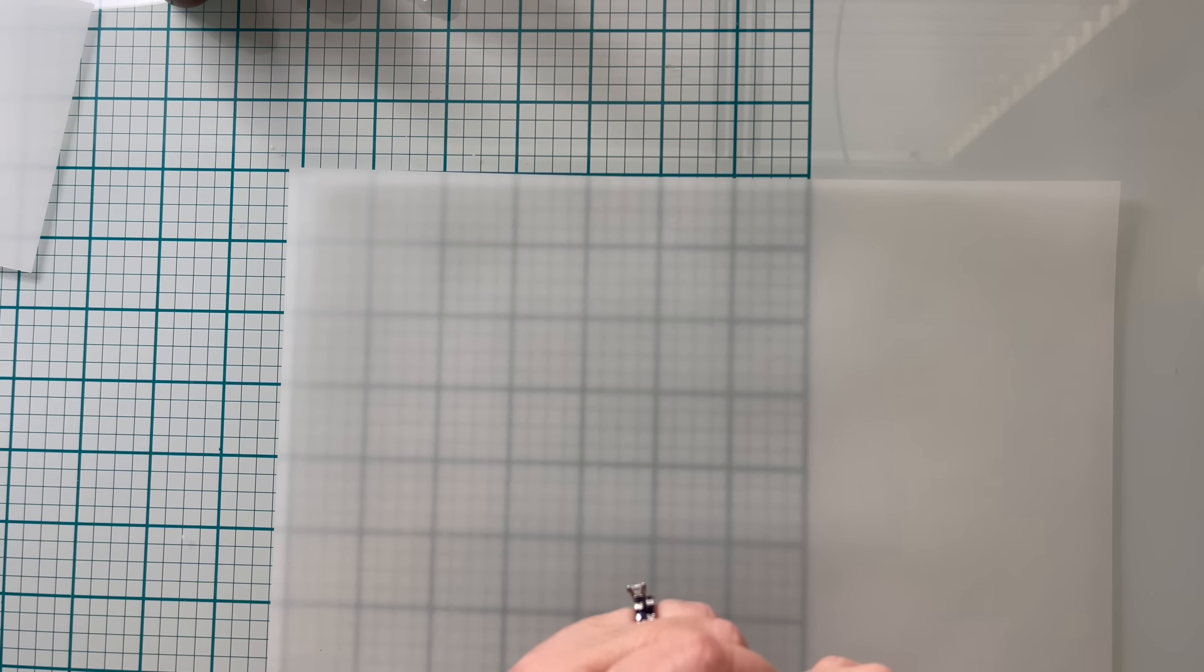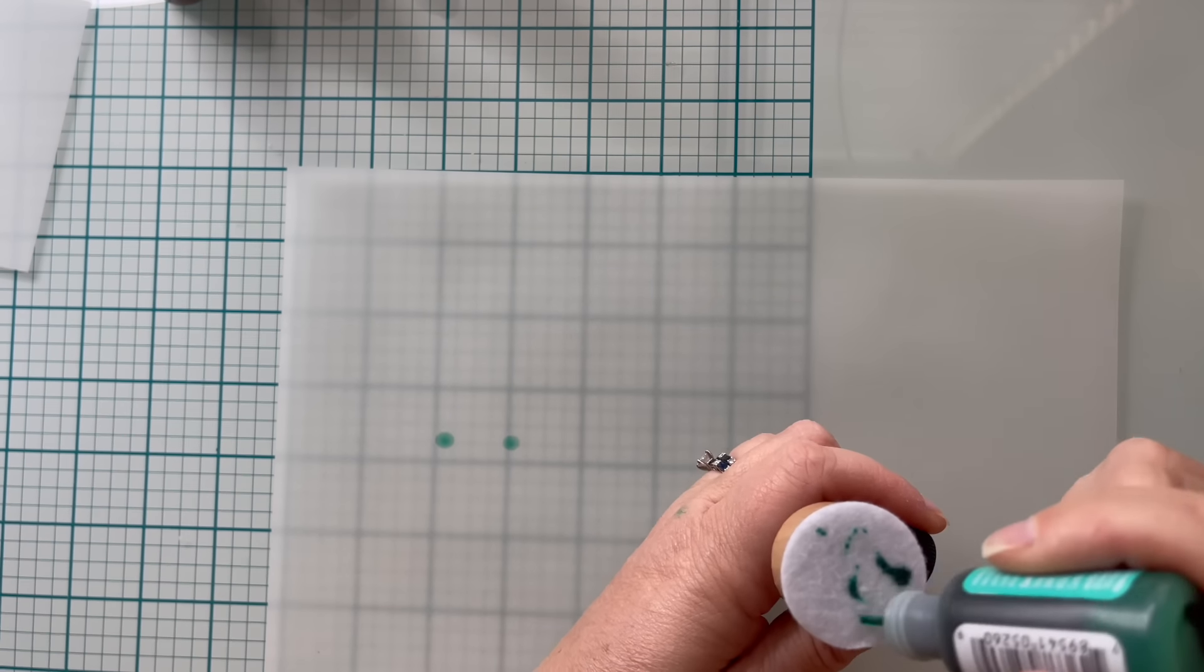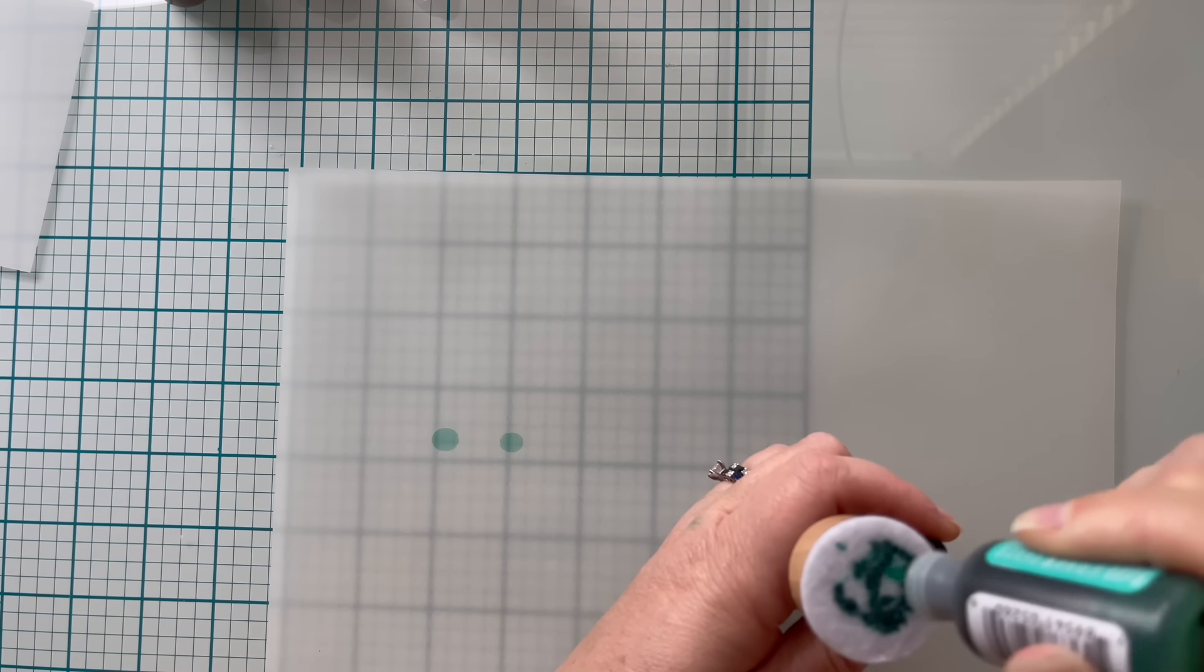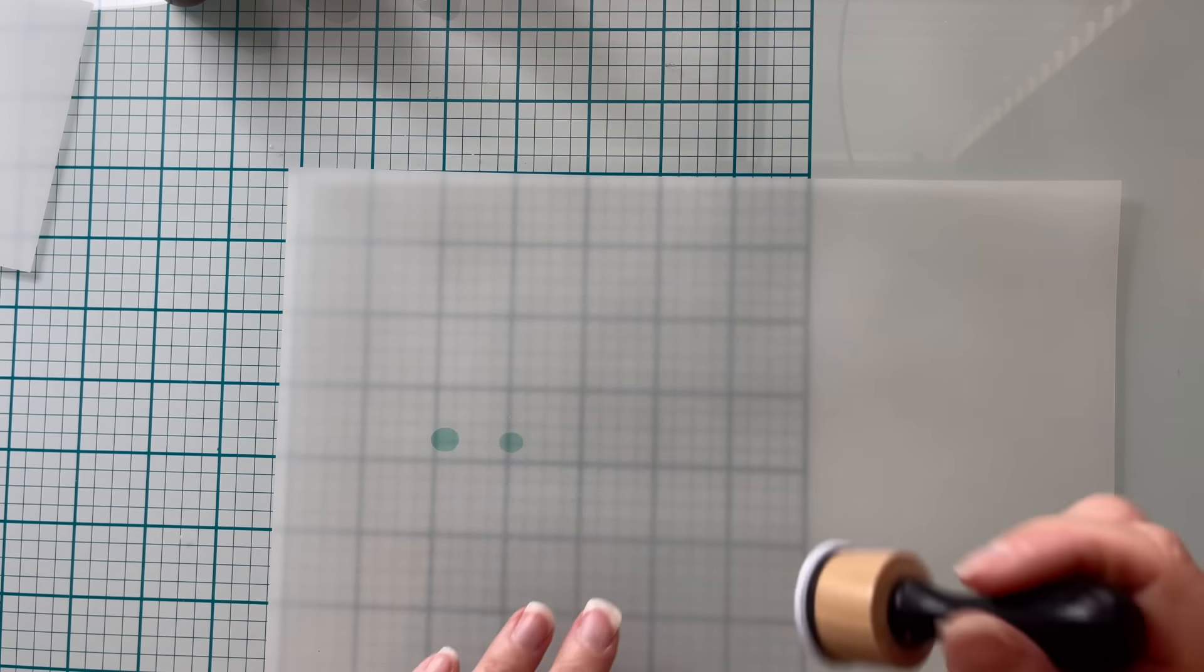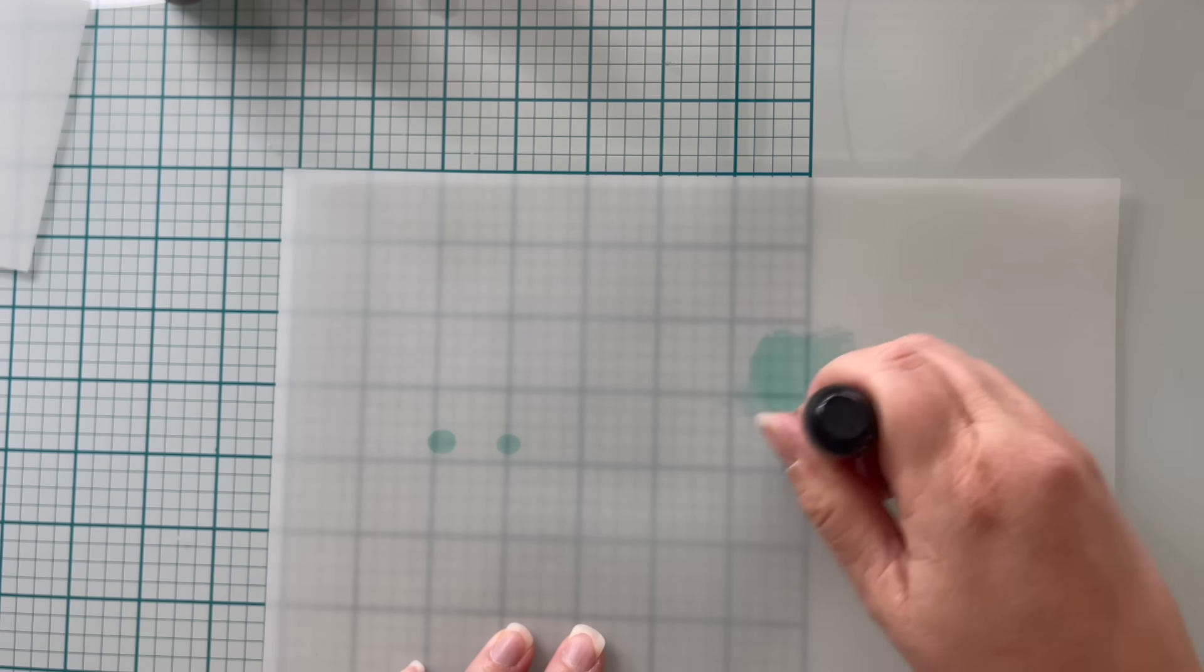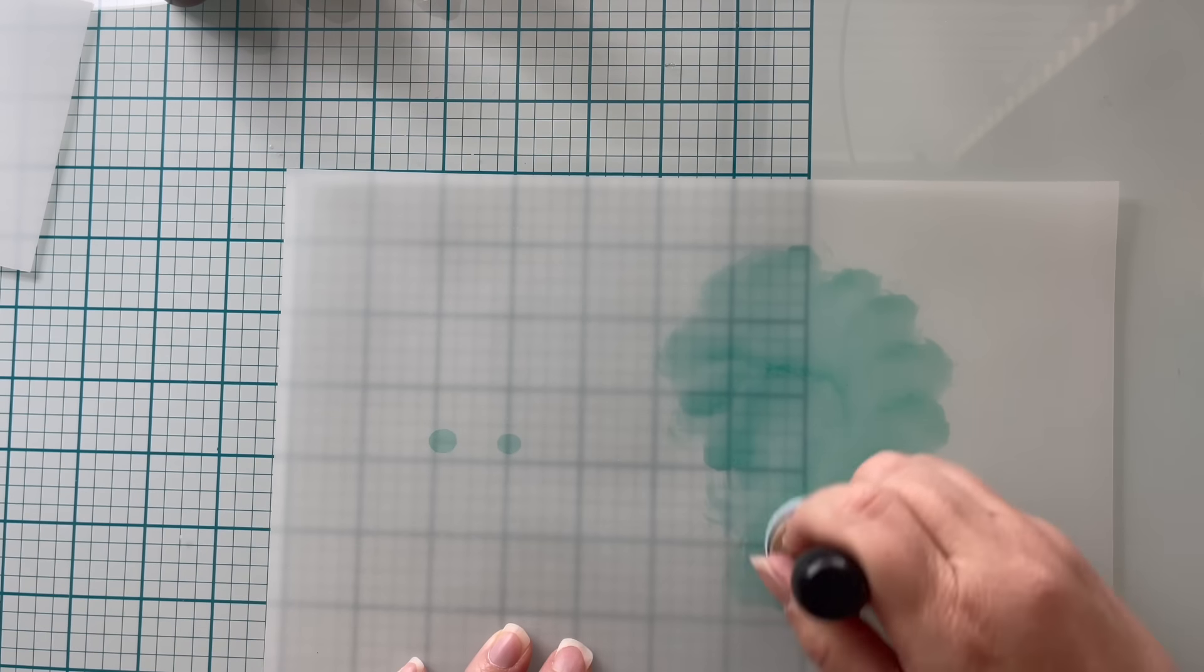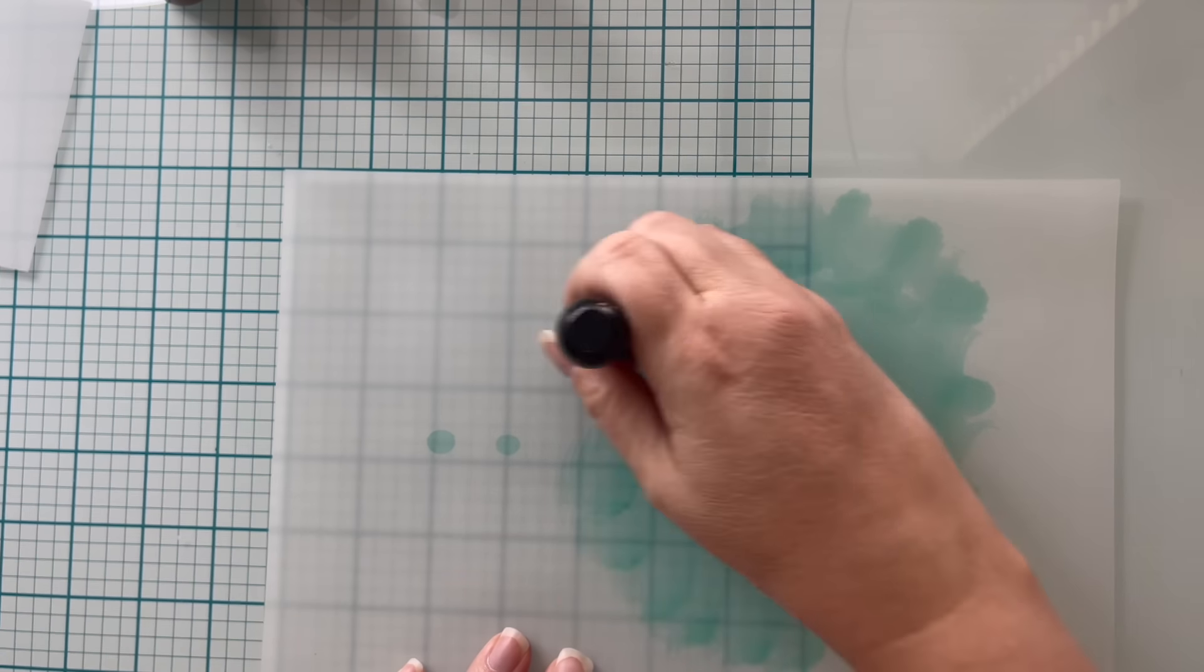I am going to be using three different colors of alcohol ink. This first one is kind of a bluish green called Patina, and it is a Ranger brand alcohol ink. Now, I'm just dabbing it onto that felt pad, and I'm going to tap it on, then I'm just going to cover it all because this was a really simple way to get some beautiful color into my vellum.